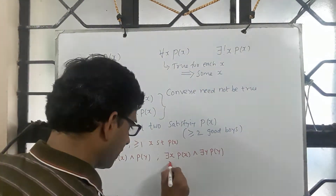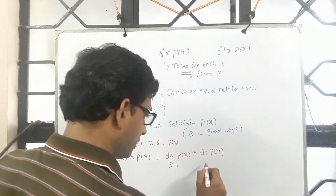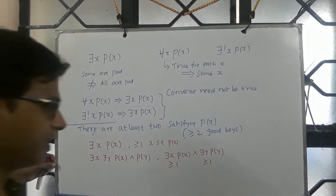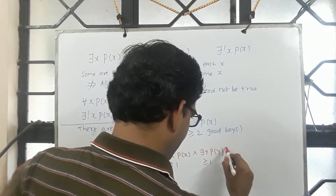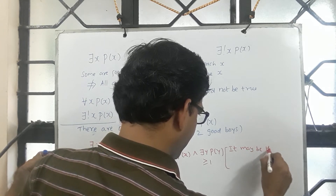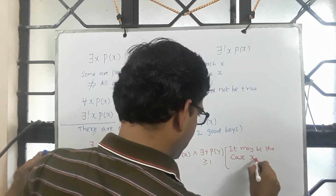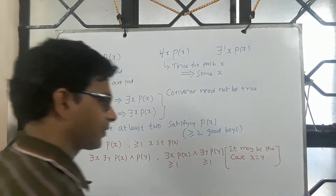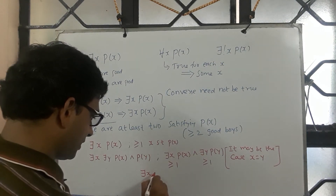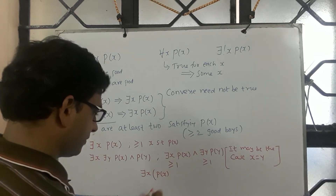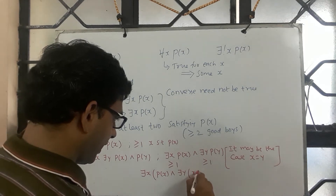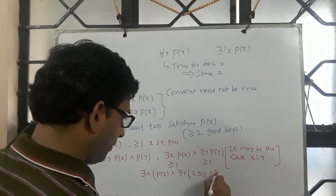This gives me at least one, and this also gives me at least one. But one has to be careful — it may be the case that x and y are the same, so one should avoid that. We say: there exist x p of x and there exist y, x not equals y, and p of y.